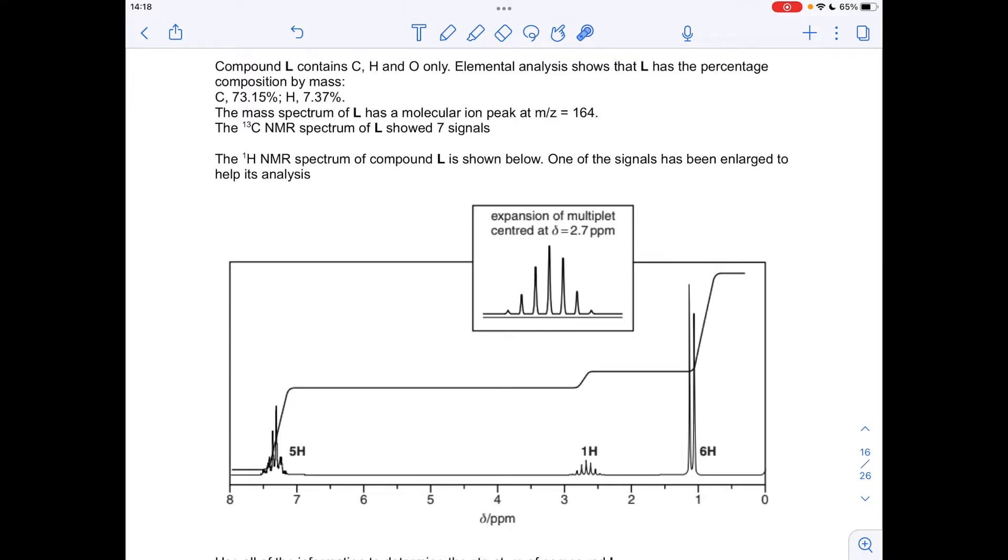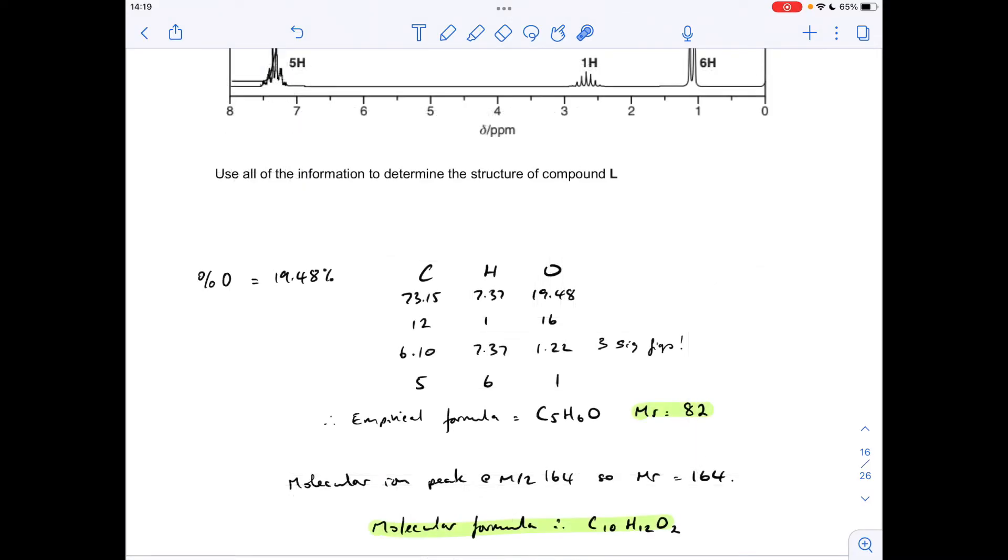So once we've got the empirical formula, we're going to compare the mass of that to the MR of the molecule, which is given by that molecular ion peak M over Z value, and that will tell us if we need to multiply out.